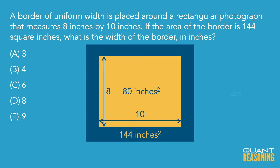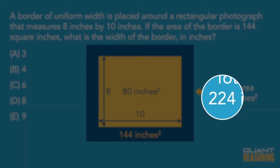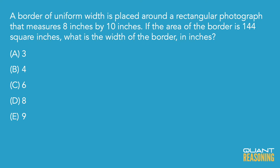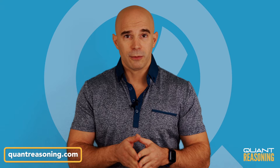That's a total of 224. I'm not going to go into an algebraic solution, because you can find that easily online. Instead, what I'm going to suggest is that we think about the number 224 as the area of the whole thing — the rectangle plus the border. What you want to think about is: what two numbers, whose difference is 2, so two numbers that are two units apart on the number line, would produce a product of 224?